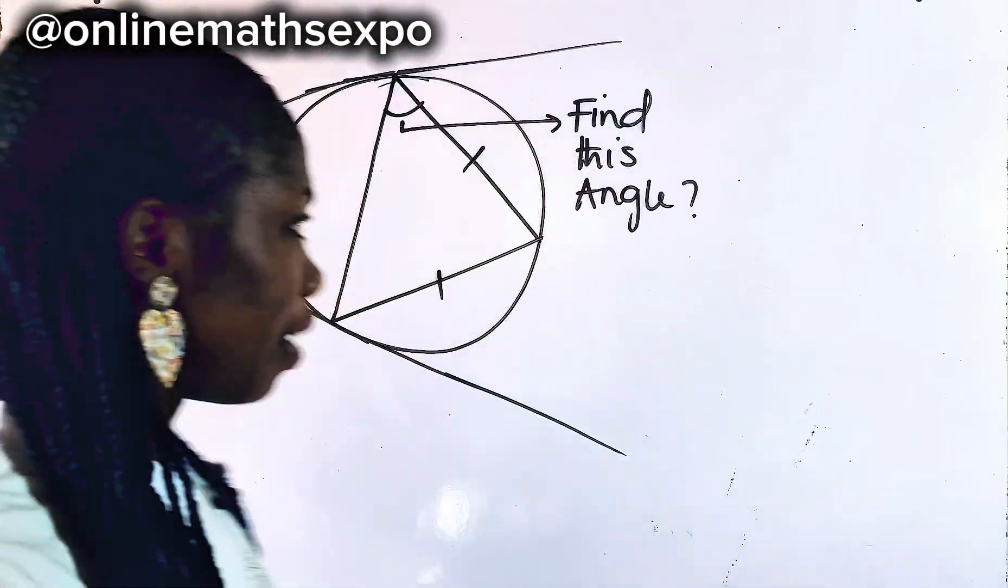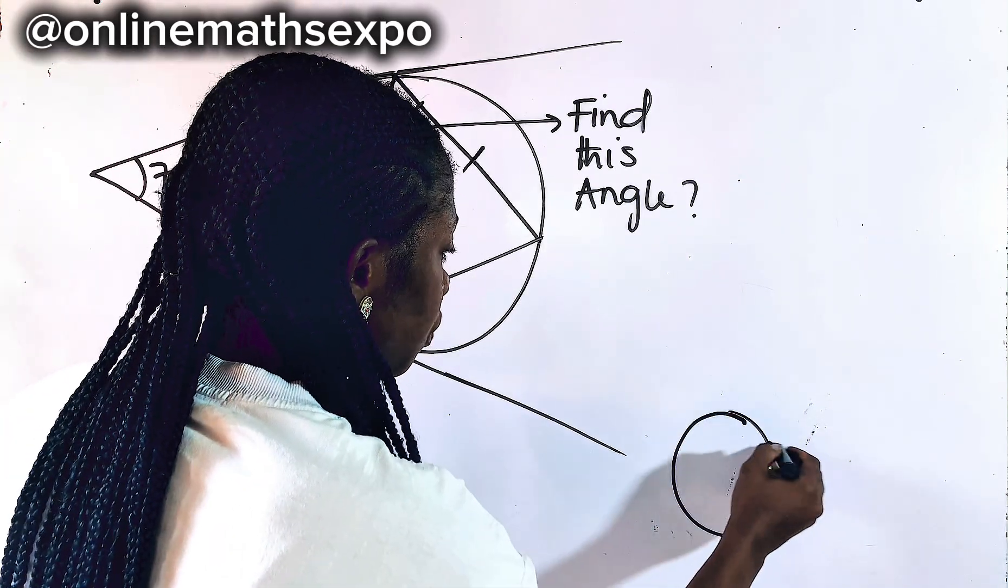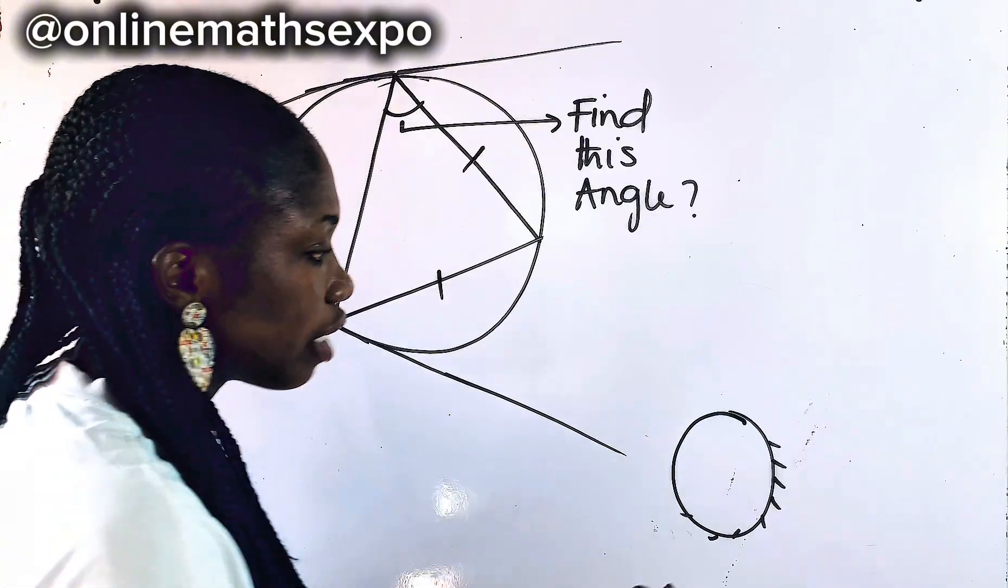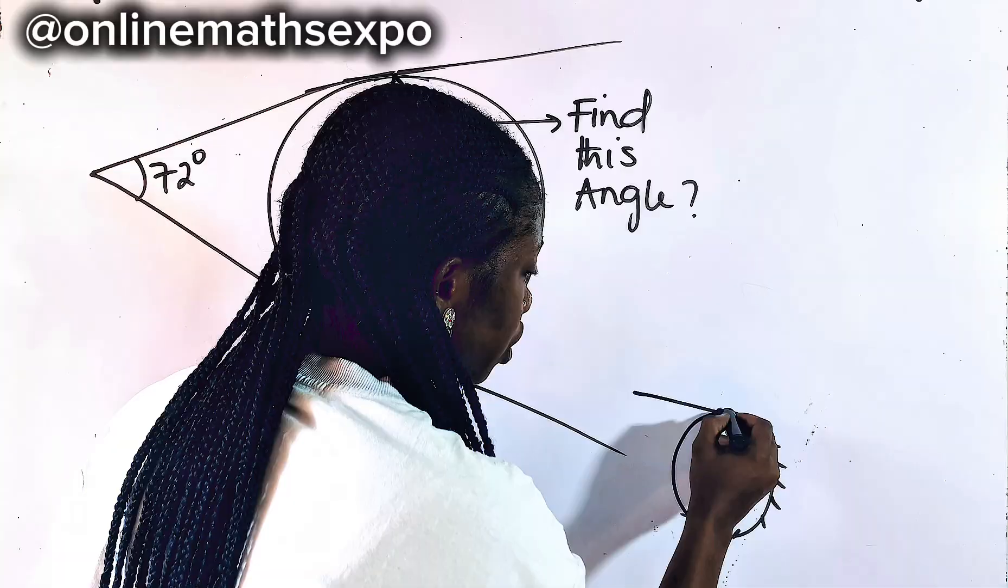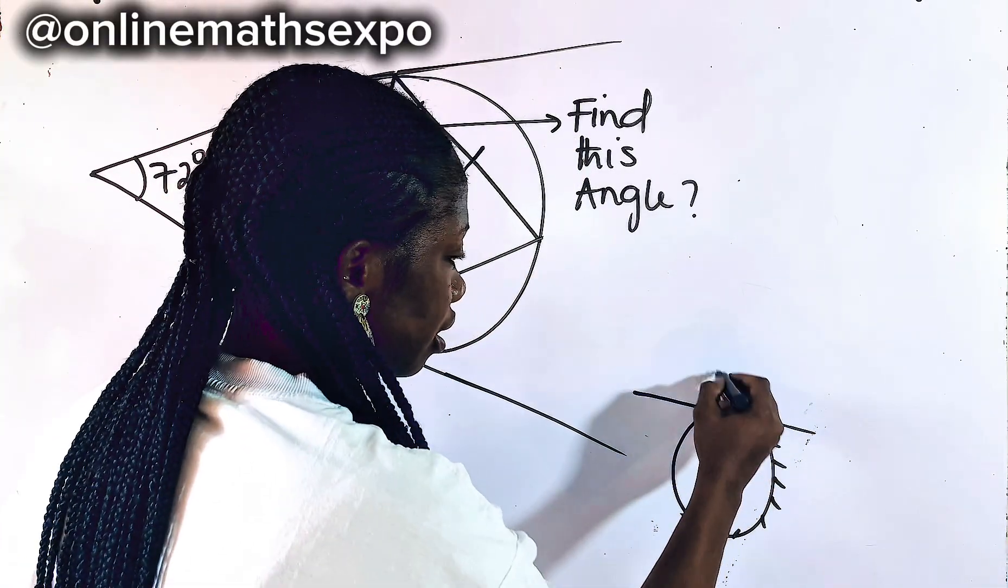Let me help you identify some of them. You know that when you draw a circle, this part of the circle is the circumference. And whenever you have a line that touches the circumference at a point and moves out, such a line is called the tangent.